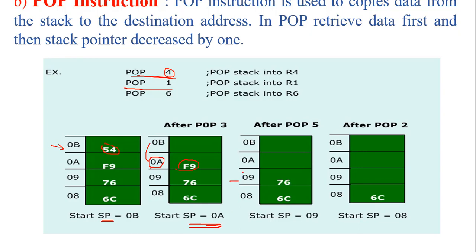After decrement, the stack pointer points to 09H location. When the next POP instruction is executed, it retrieves data from the 09H location — that is 76H — and stores it into R6 register. Again the stack pointer is decremented by 1, so the stack pointer now indicates 08H location. In this way we retrieve data from the stack and the stack pointer register is decremented by 1 after each pop.